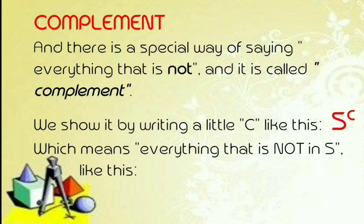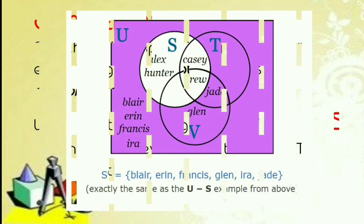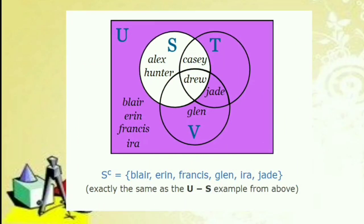Complement. And there is a special way of saying everything that is not in a set — it is called complement. We show it by writing a little c, so capital S and little c, which means everything that is not in S. Complement — ang ibig sabihin, lahat ng wala. Nagamit tayo ng malaking letter S at maliit na letter C sa tabi. S complement is equal to Blair, Erin, Francis, Glenn, Ira, Jade — exactly the same as the universal set minus soccer.